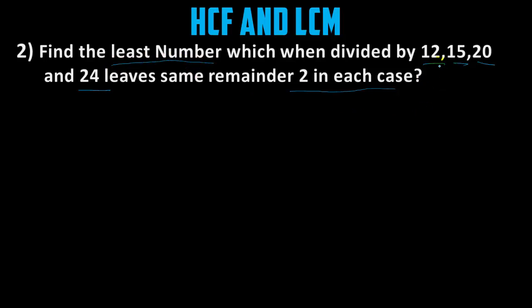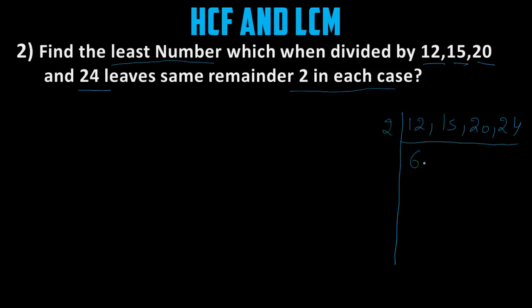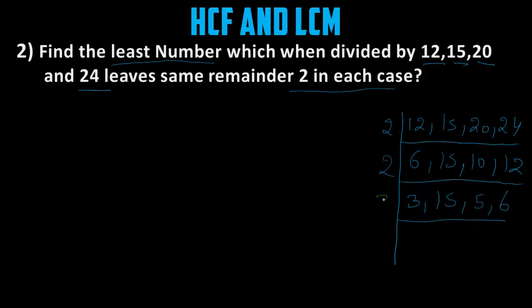Four numbers are given: 12, 15, 20 and 24. We find the LCM. Take 2: 2 into 6 gives 12, 15 stays, 2 into 10 gives 20, 2 into 12 gives 24. Again take 2: 2 into 3 gives 6, 15 stays, 2 into 5 gives 10, 2 into 6 gives 12. Again take 3: 3 into 1 gives 3, 3 into 5 gives 15, 5 stays, 3 into 2 gives 6.